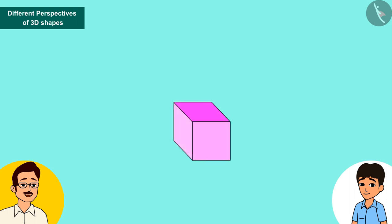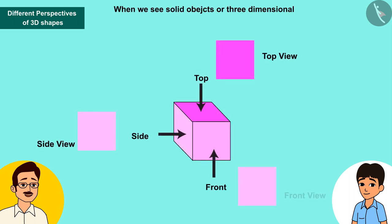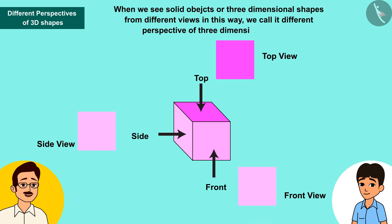When we see solid objects or three-dimensional shapes from different views in this way, we call it different perspectives of three-dimensional shapes.